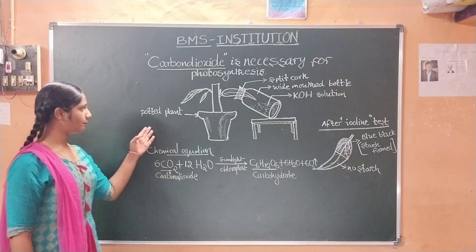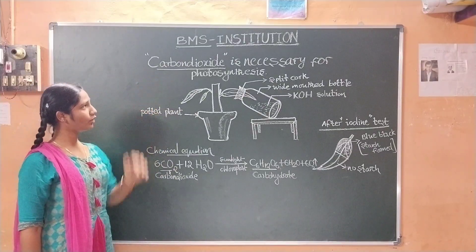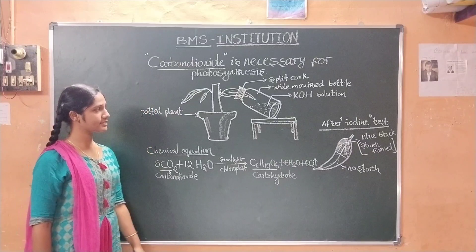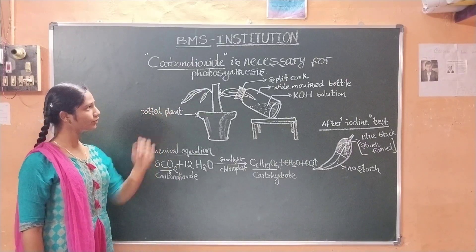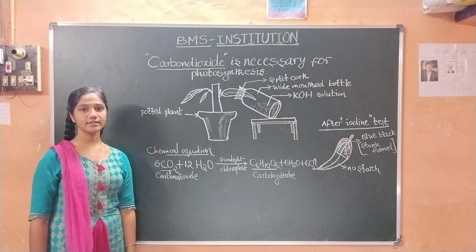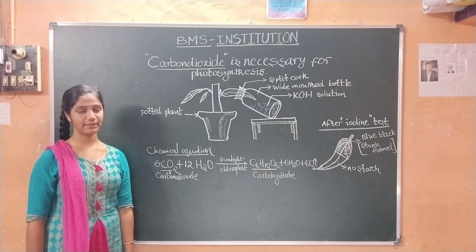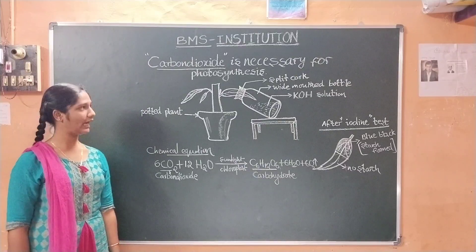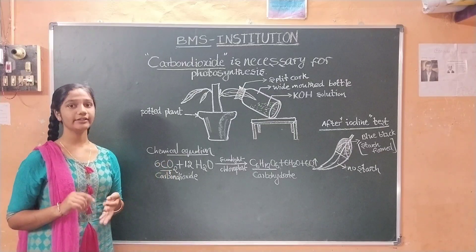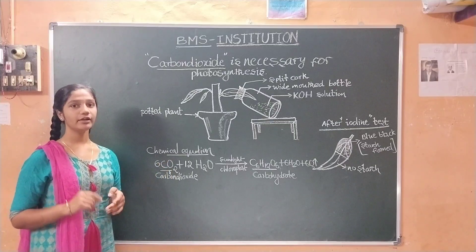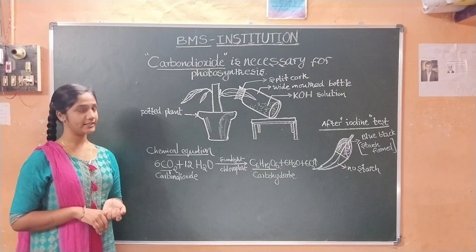Let's go into the topic. Our topic is carbon dioxide is necessary for photosynthesis reaction. What is photosynthesis? Photosynthesis is a process by which plants prepare their food by themselves with the help of carbon dioxide, sunlight, water, and some raw materials.